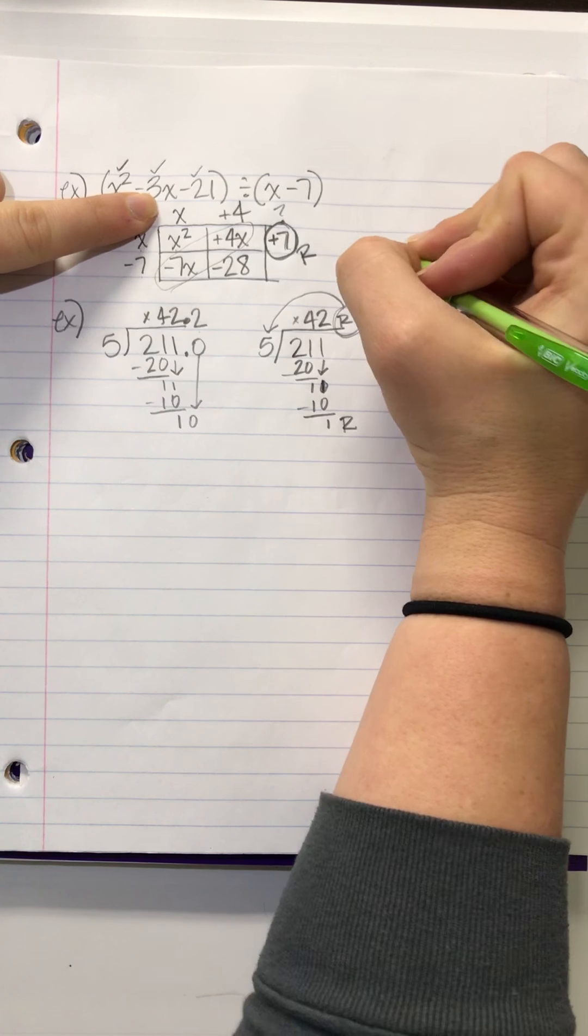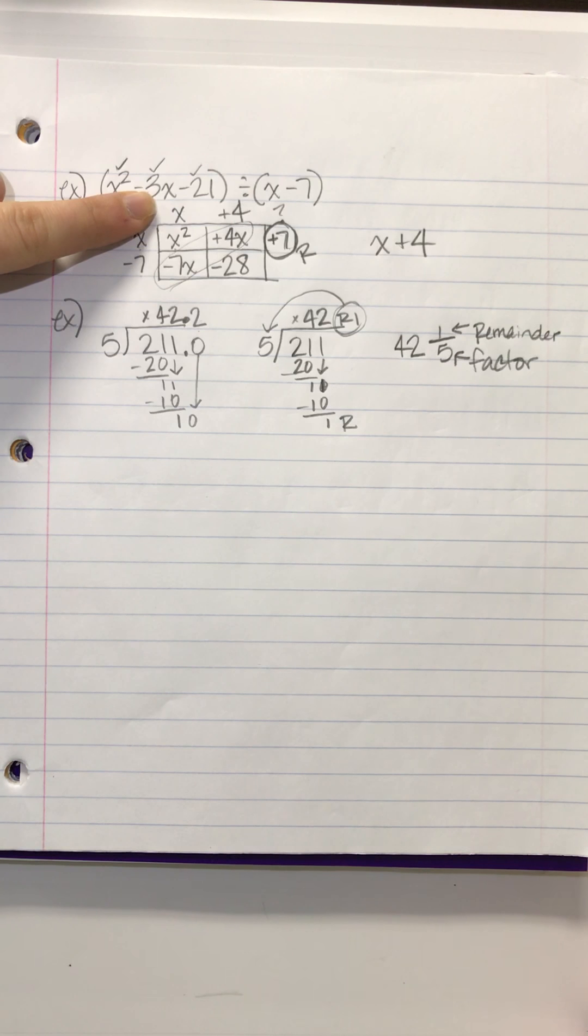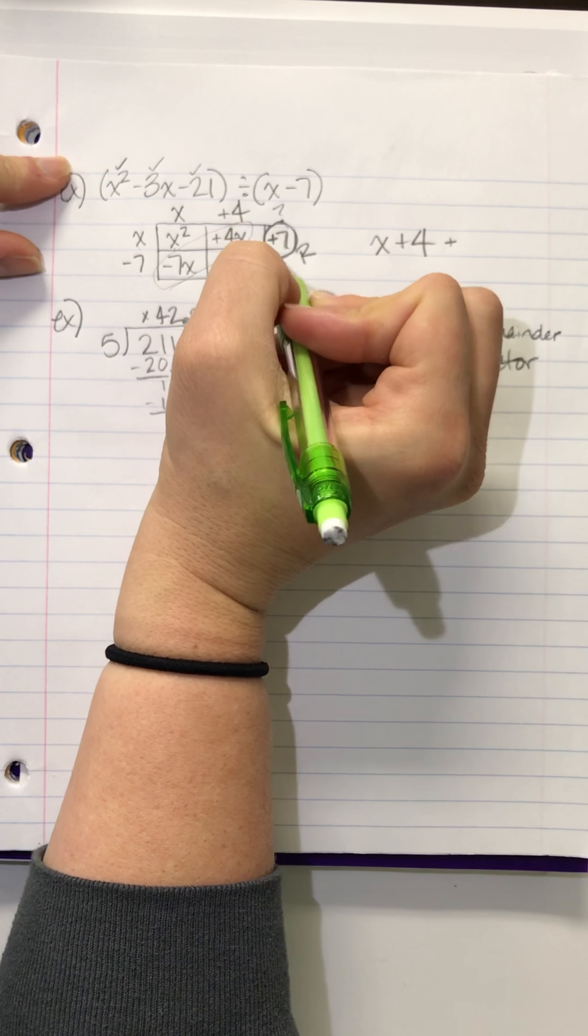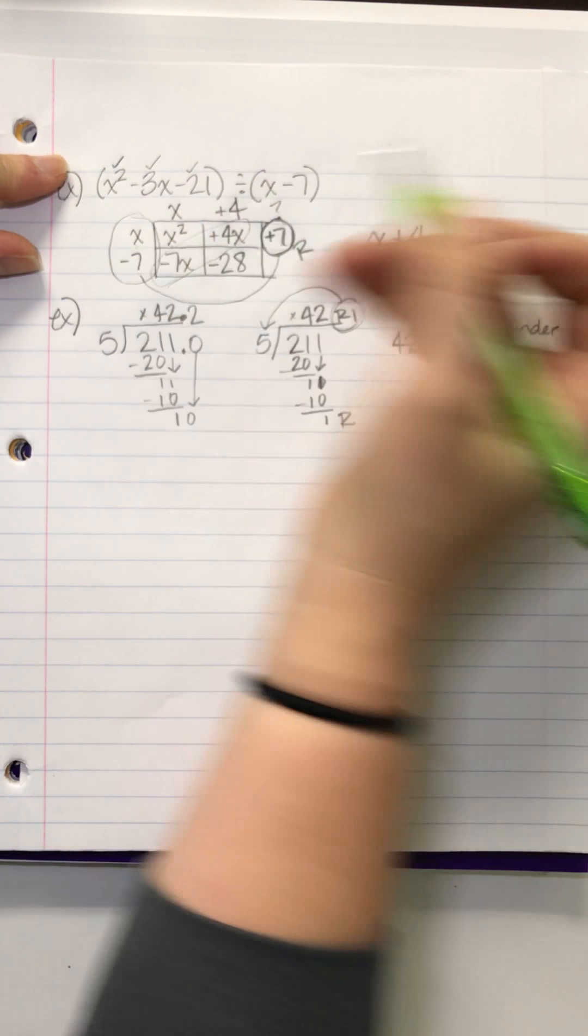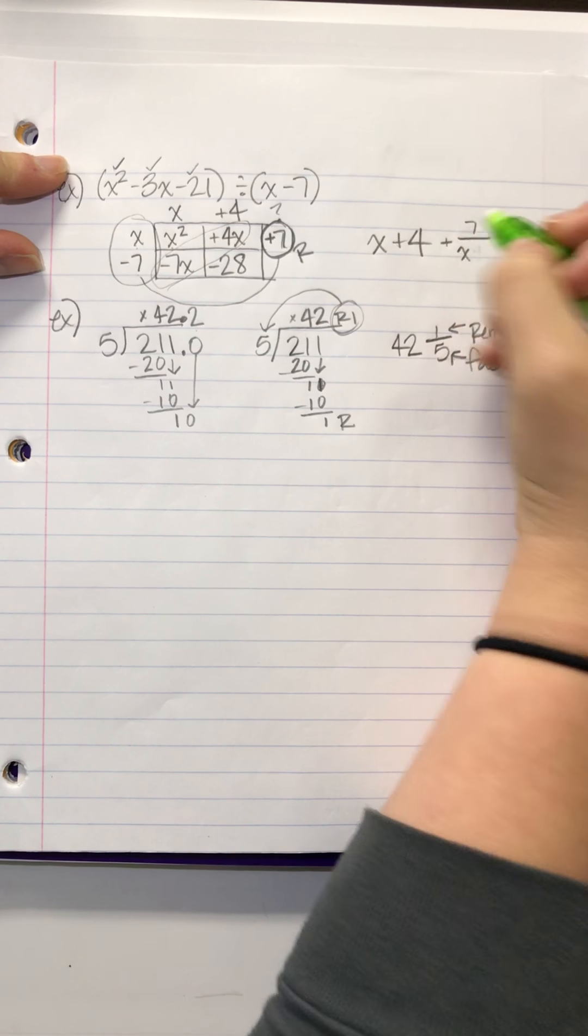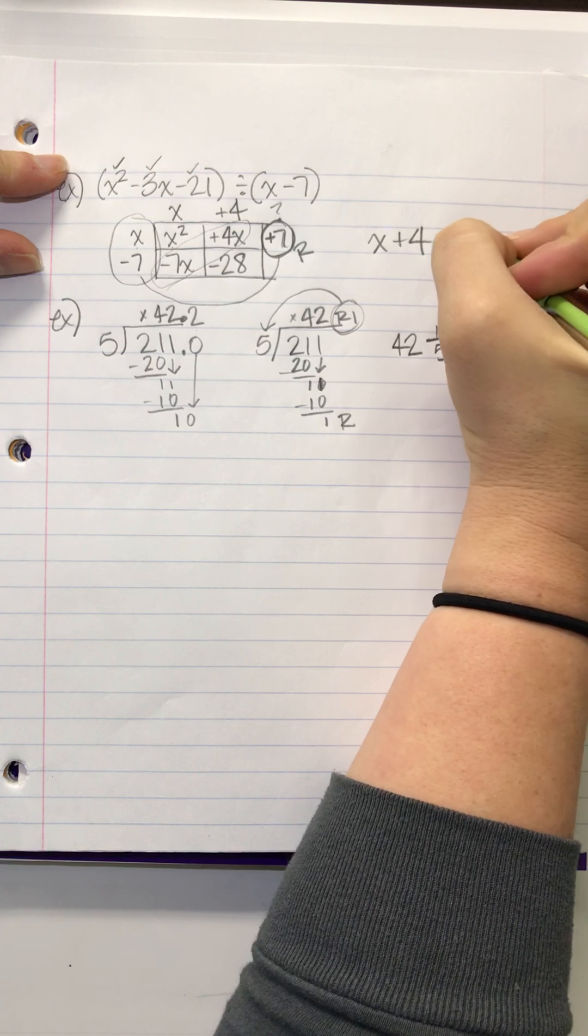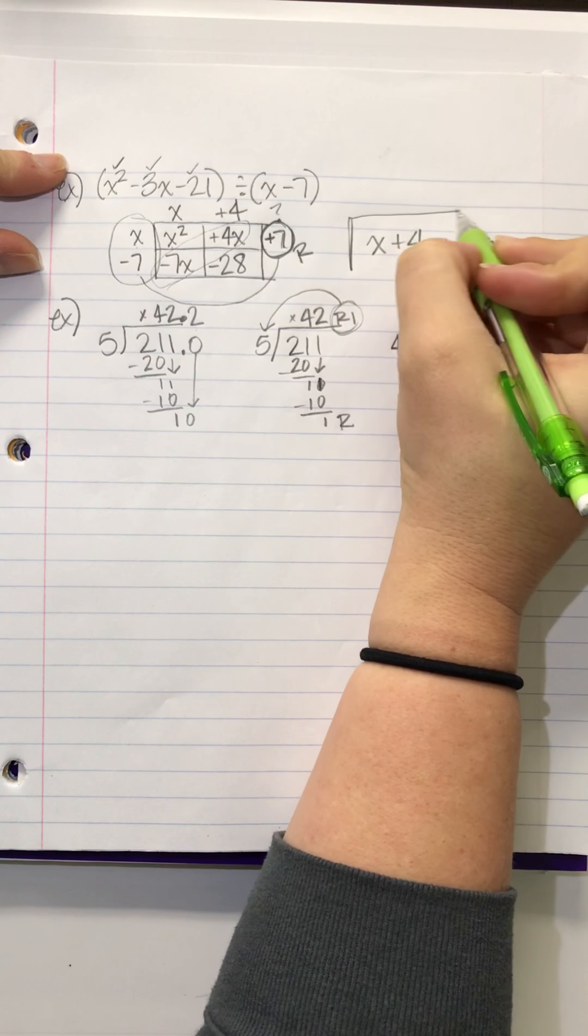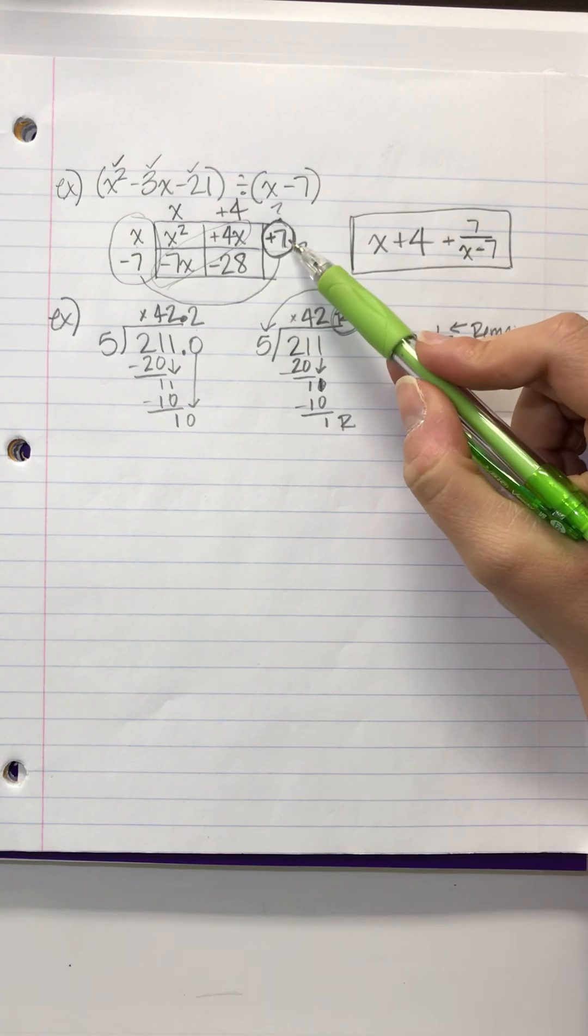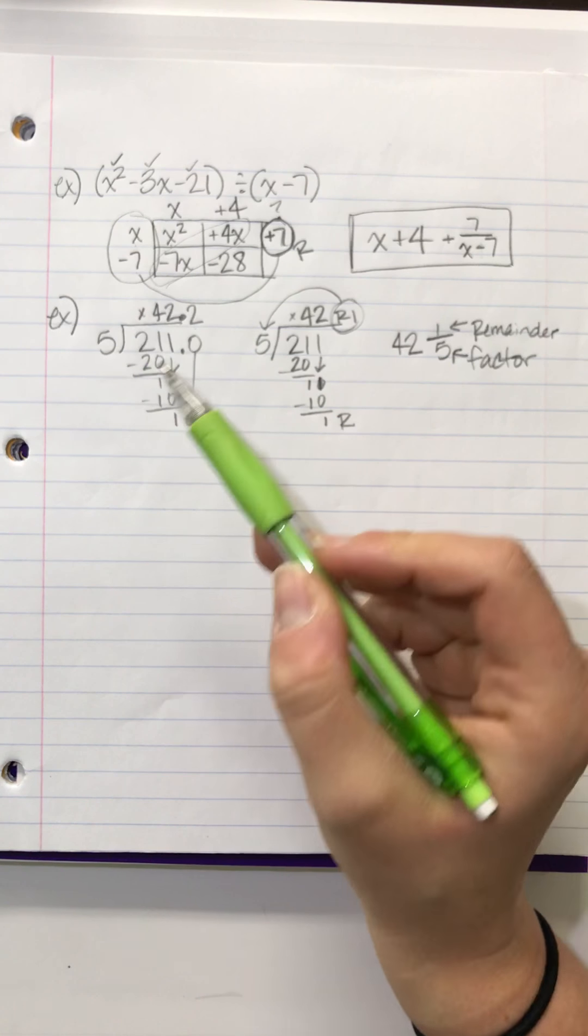So, here's how this works. Your answer up here is x plus 4 is the normal part of the answer. And then, plus your remainder over the factor. 7 over x minus 7. So, it'd be x? No. And that's it. It's gross and disgusting and it doesn't happen a whole lot in Algebra 1. It pops up every once in a while, so we kind of need to show you. But all it is is, oh, I have a remainder of 7 over what I was originally dividing by.